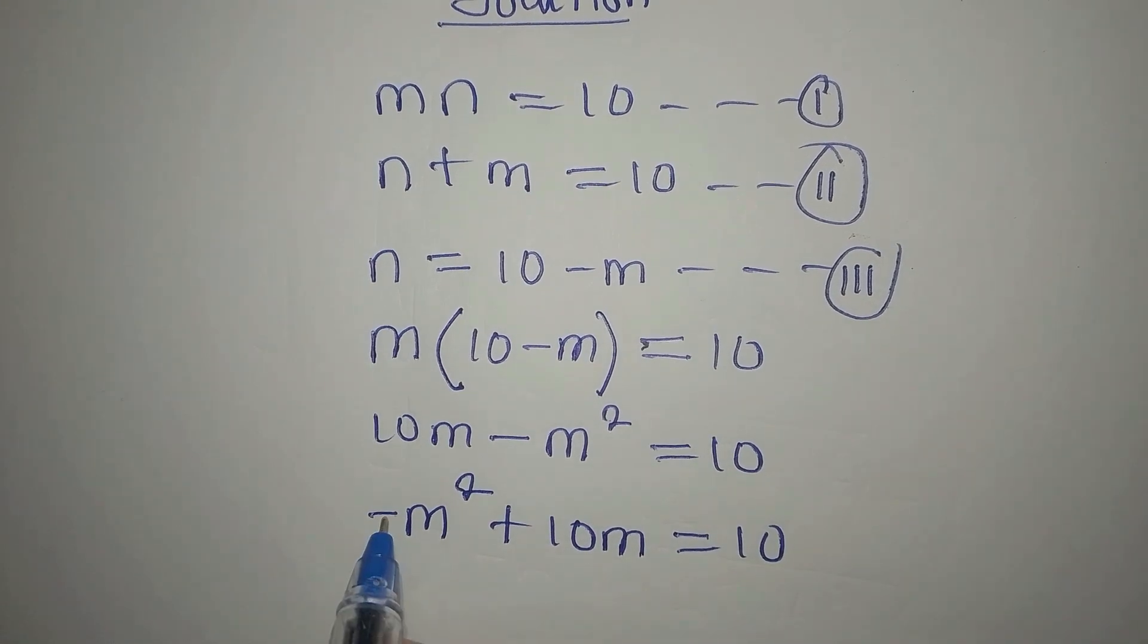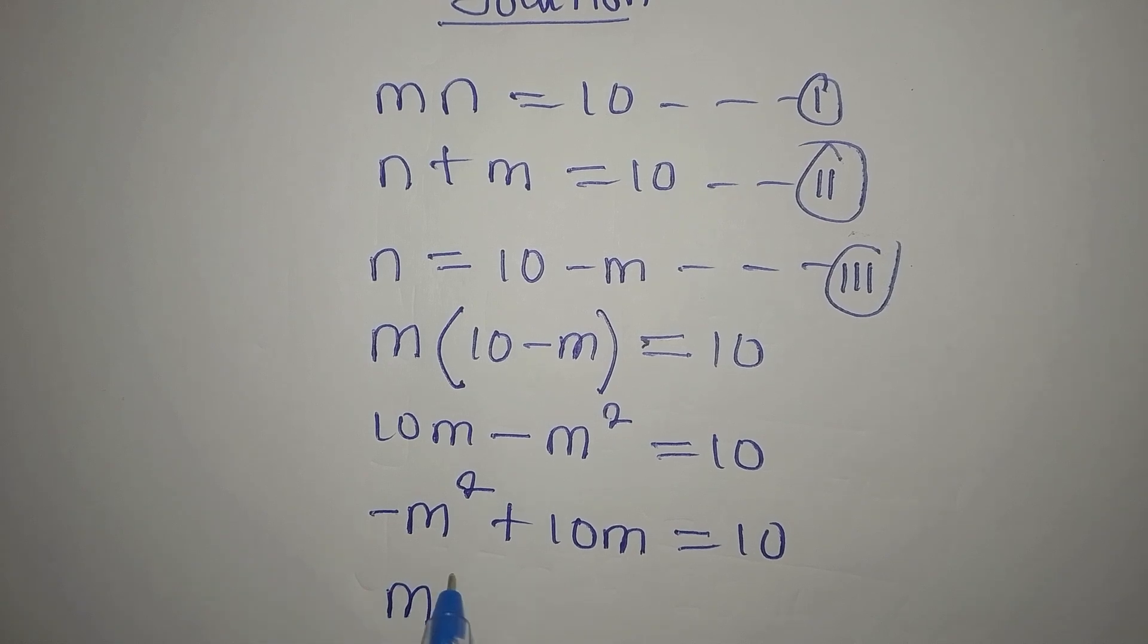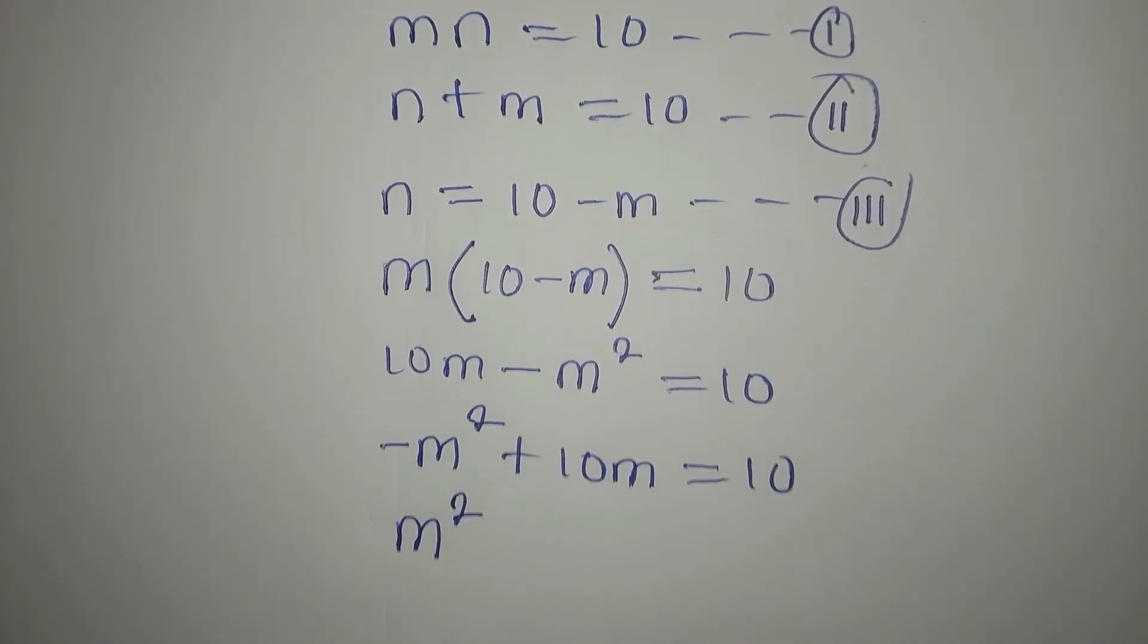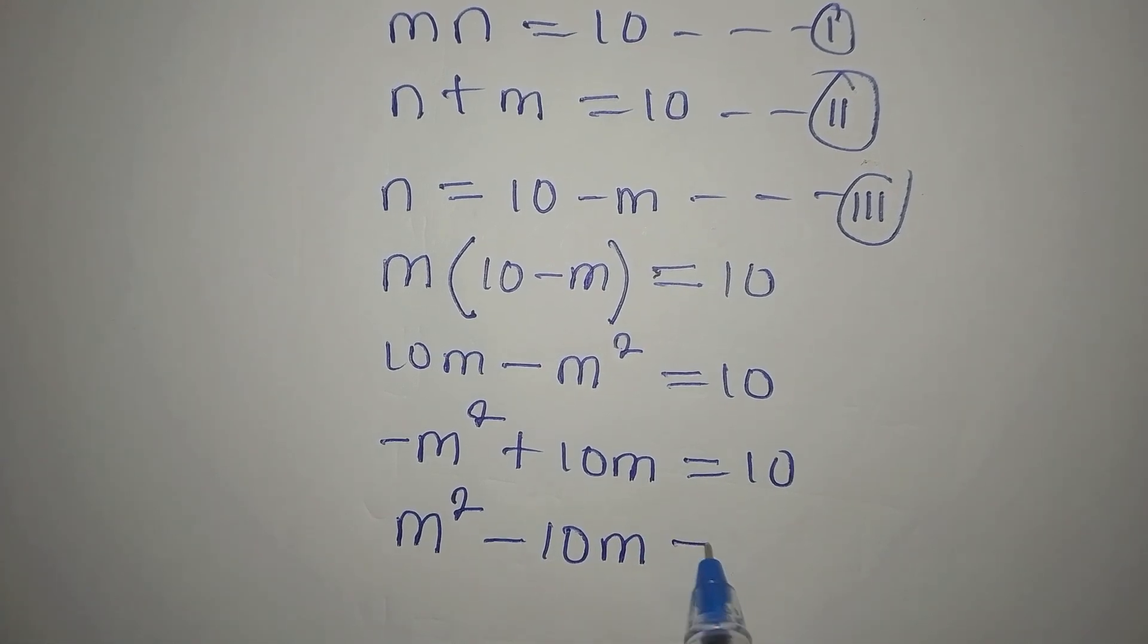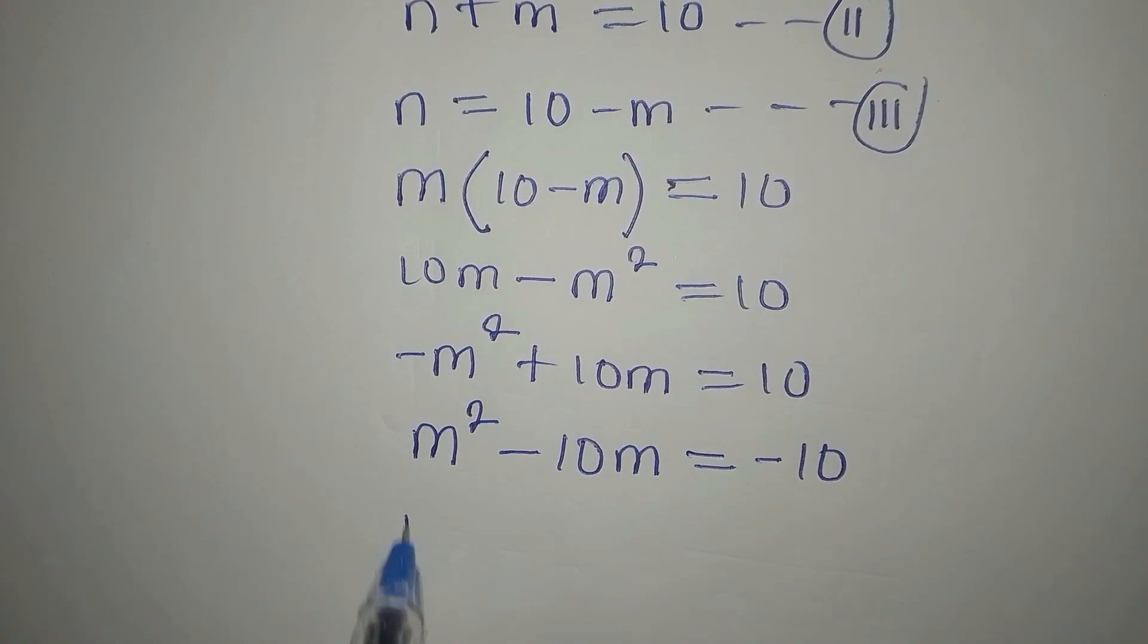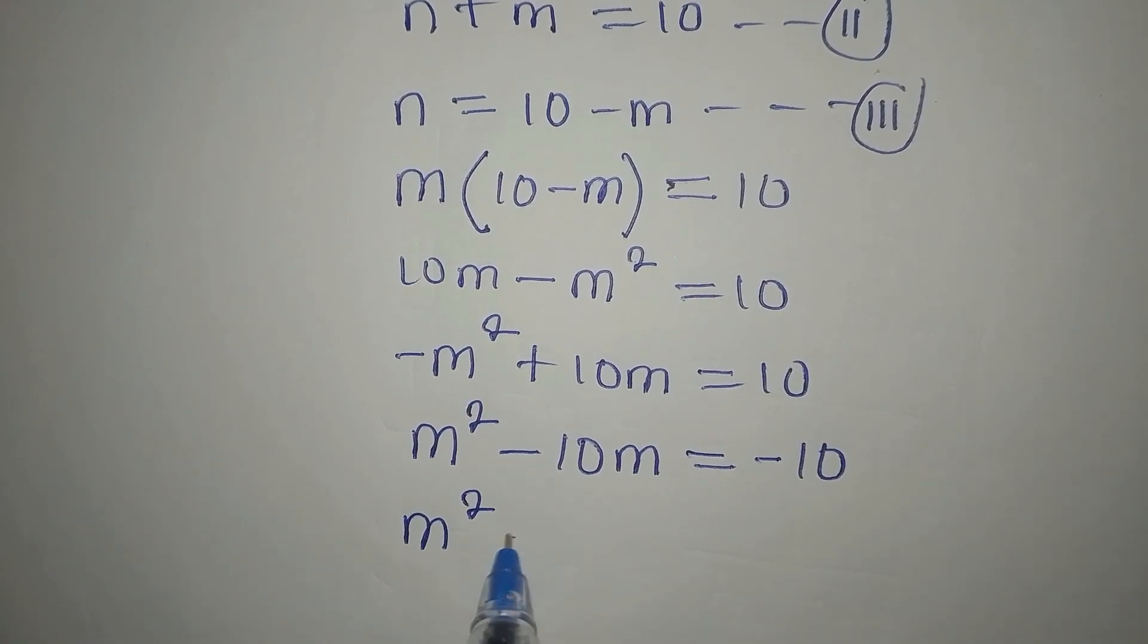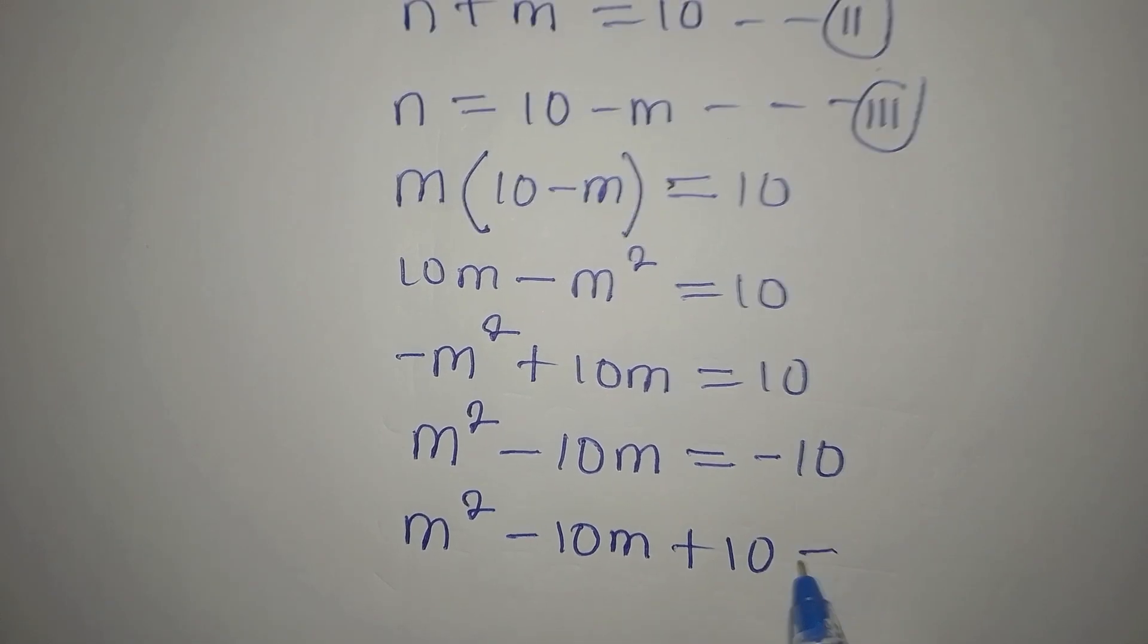To remove this negative, multiply everything by negative 1. So that will give this, make this to be positive m squared. This becomes negative 10m. And this becomes negative 10. Now, m squared minus 10m plus 10 is equal to 0. I brought negative 10 to the left.